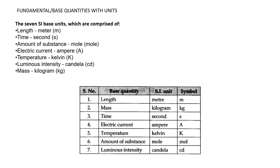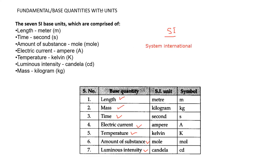The seven base quantities are: length, mass, time, electric current, temperature, amount of substance, and luminous intensity. Their SI units — SI means Système International — represent a system developed by physicists from different regions. These seven quantities are considered base quantities because they can be measured directly.